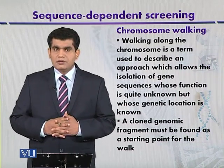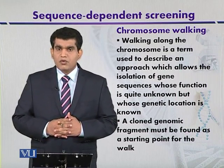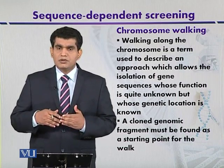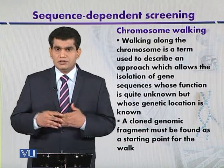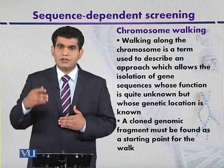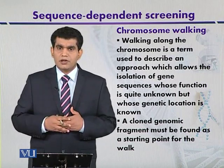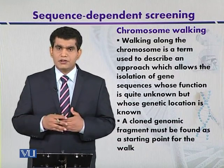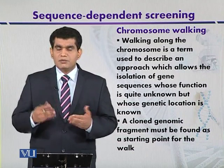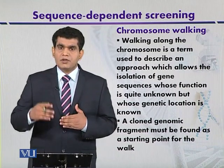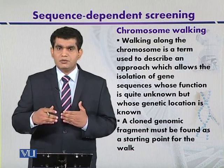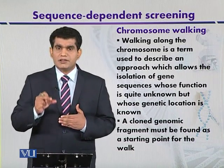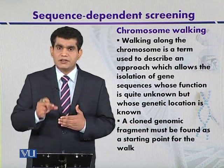Chromosome walking is used to detect a gene whose expression or function is not well known but whose genetic location is known. This technique is called positional walking, where we detect genes whose function is unknown but location is known. For this purpose, we must have random DNA fragments in order to produce a library, and one of the fragments can be used as a starting point or probe.